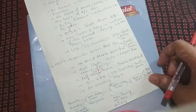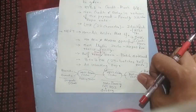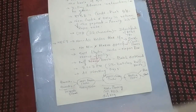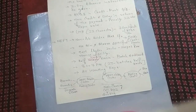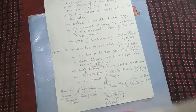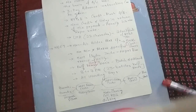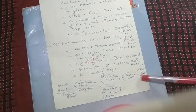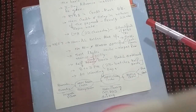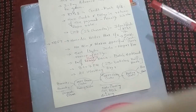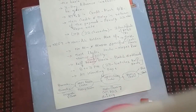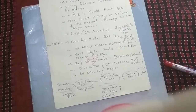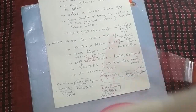NEFT operates on a half-hourly batch settlement basis — a batch is created first, then transactions are settled at one time in that batch. Now, let us understand how NEFT transactions take place, as this will help you understand how NEFT works. Let's say there are some branches.